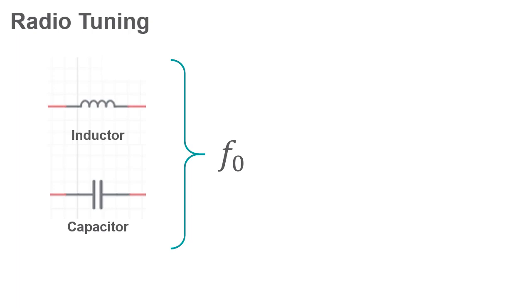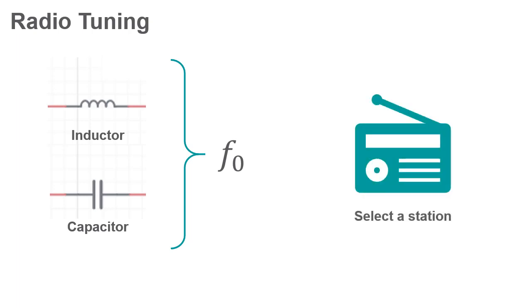By manually changing the inductance or capacitance of the tuning circuit, the radio listener can control its resonant frequency. This allows them to select what frequency of radio wave passes through the tuning circuit, which in turn determines which radio station is played.